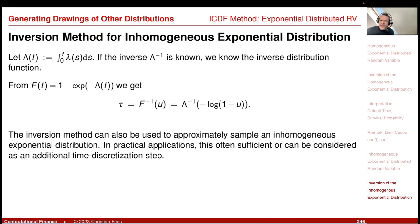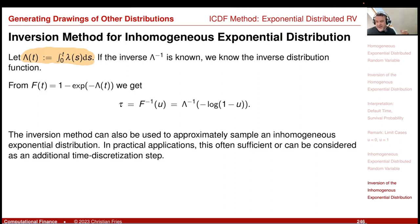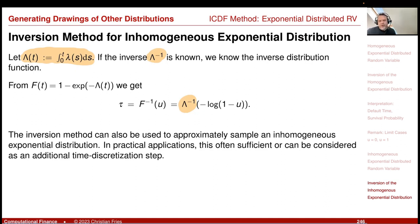For the inversion method in the inhomogeneous case, instead of dividing by lambda, we need the inverse of the integral, calling it capital Lambda inverse, where capital Lambda(t) = integral from 0 to t of lambda(s) ds. We still compute z = minus log(1 minus u), but then apply the inverse of this integral rather than simply dividing by lambda.